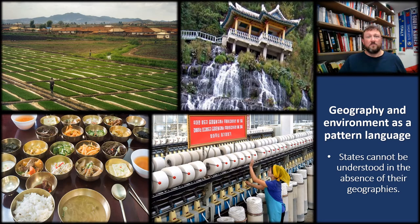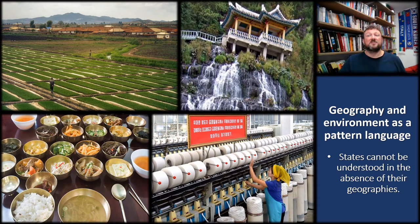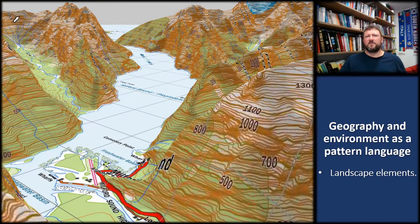And really importantly, in the Anthropocene epoch, the environment is not just the stage on which the human drama is playing out, but it's also an active source of threats, risks, and opportunities as well. So let's flesh out this pattern language of geography and environment.